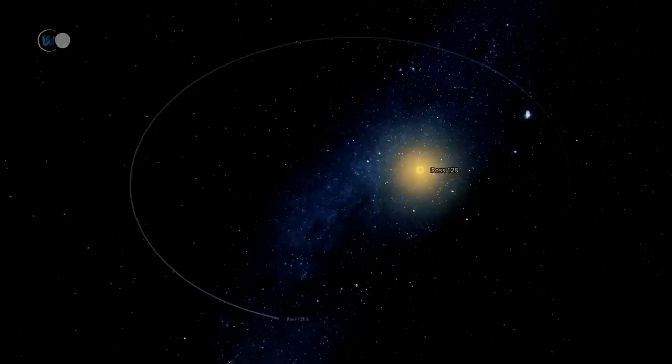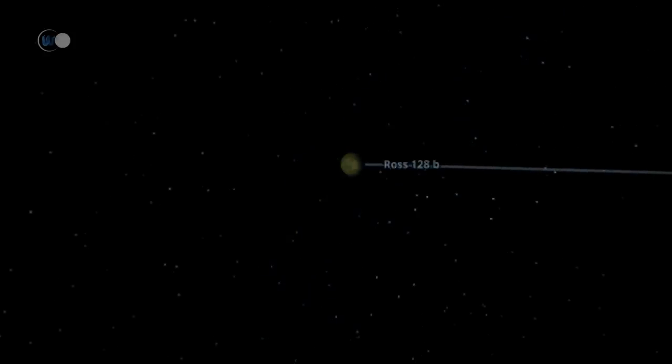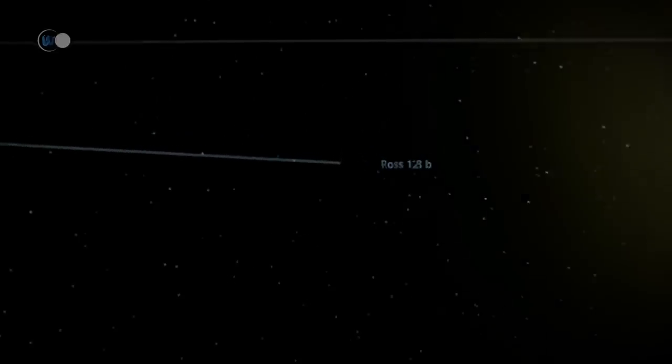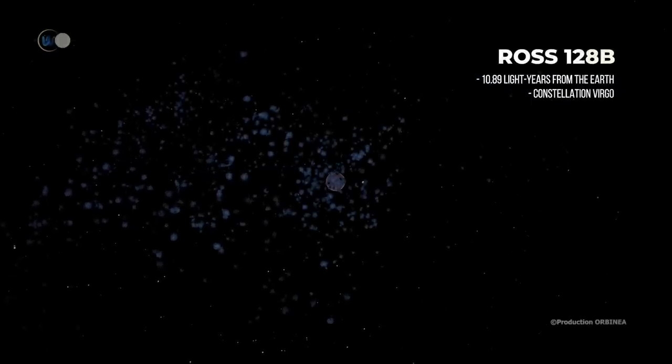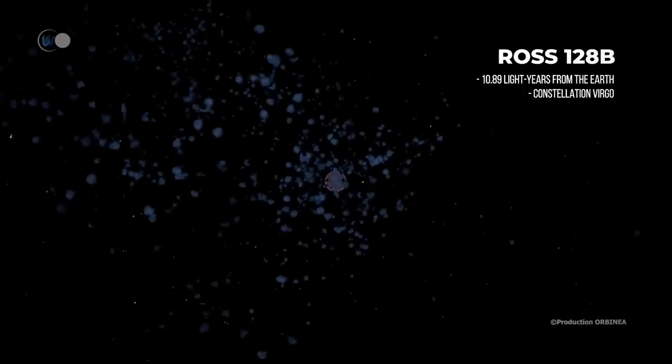As mentioned earlier, Ross 128 is part of a system. It hosts an exoplanet. This one, probably telluric, orbits in the interior edge of the zone of habitability, and thus receives approximately 38% more sunlight than the Earth. The planet Ross 128 b is therefore potentially habitable. It is, after Proxima Centauri b, the second closest exoplanet to our solar system to enter this coveted category of cosmic objects. Let's see what this satellite looks like.